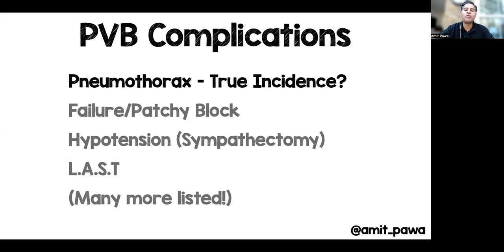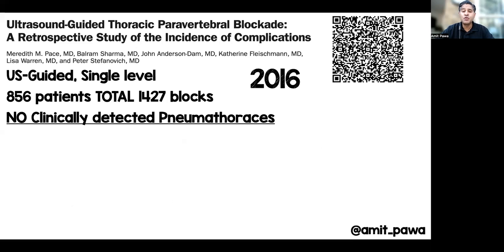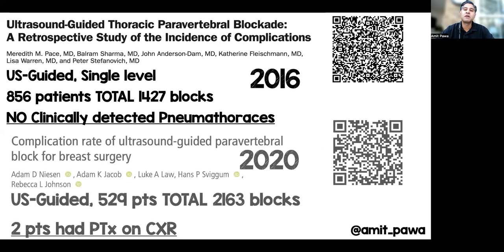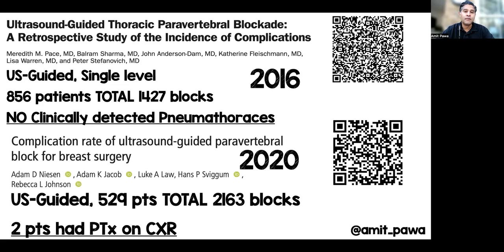What are the complications? People often fear pneumothorax — but what's the true incidence? The truth is it's probably lower than we realize. A 2016 paper in over 1,400 blocks found no clinically detected pneumothoraces. A 2020 paper with even greater numbers of paravertebral blocks — including multiple-level and bilateral blocks — found no clinically detected pneumothoraces or pleural punctures, but on chest X-ray two patients had a pneumothorax. When calculated per block, the incidence was similar to that of breast surgery alone without a paravertebral block.